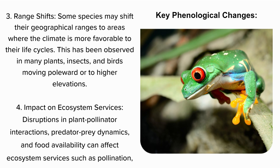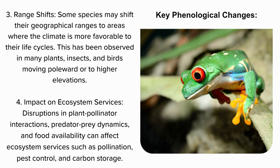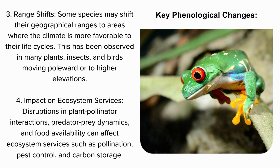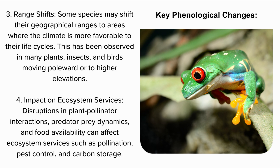3. Range Shifts: Some species may shift their geographical ranges to areas where the climate is more favorable to their life cycles. This has been observed in many plants, insects, and birds moving poleward or to higher elevations.